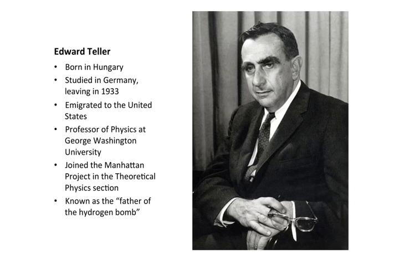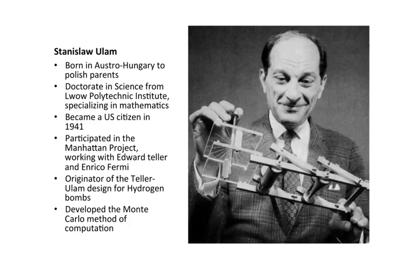The leading scientific proponent of the hydrogen bomb was Edward Teller. Teller is sometimes called the father of the hydrogen bomb — he encouraged the development of the hydrogen bomb, or what he called "the super," even as fission bombs were being developed in the Manhattan Project during World War II. Stanislav Ulam was a crucial collaborator on the development of the fusion bomb, and there continues to be something of a dispute over their respective contributions to the project even to this day.